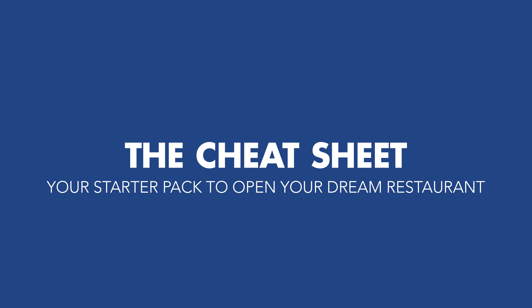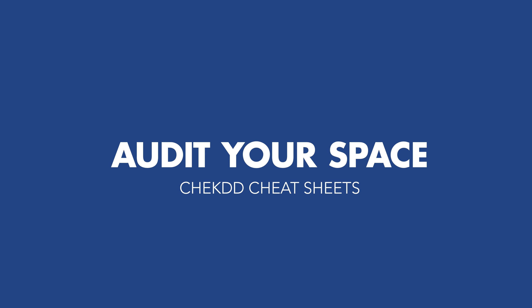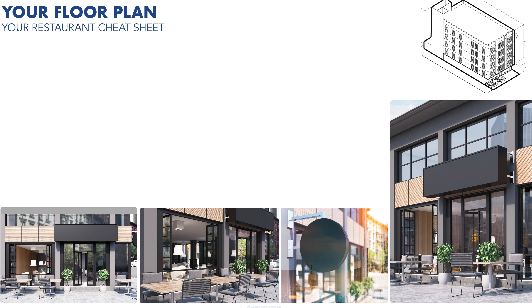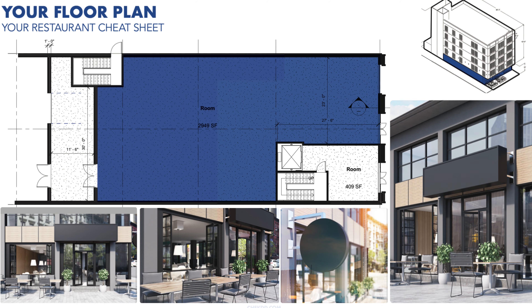Let's break down the essentials of auditing your potential restaurant space — a crucial step before you commit to a lease. First off, we'll use a floor plan to map out the dimensions and layout of the space. Think of it as your bird's-eye view blueprint, giving you a clear picture of what you're working with. This floor plan isn't just for design — it's your ticket to effective communication with the landlord.